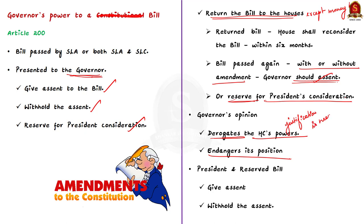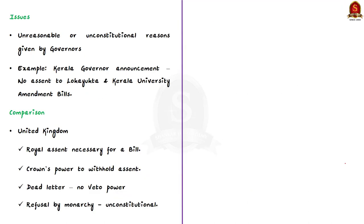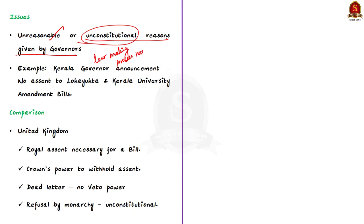When a bill is reserved for the consideration of the president, the president has two options: give assent or withhold assent. The governor's or president's assent becomes the most crucial act in the whole lawmaking process. The issue here is the unreasonable or unconstitutional reasons given by the governors of some states while reserving a bill for the president or withholding their assent — which is very unconstitutional because the lawmaking process ends with the assent of the governor or president.